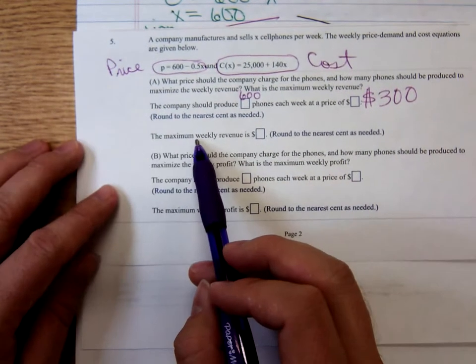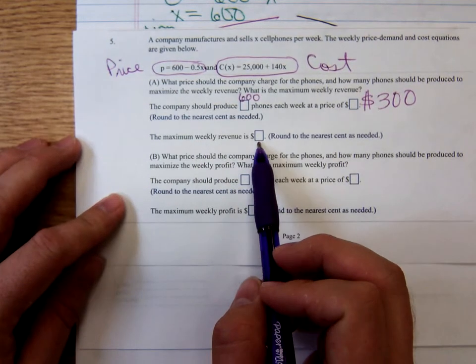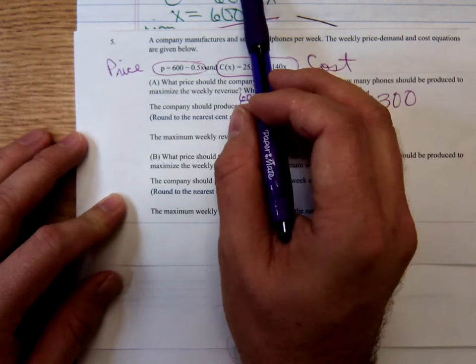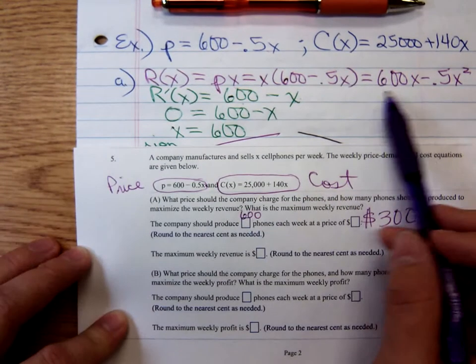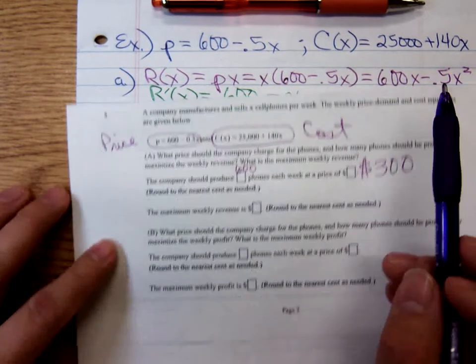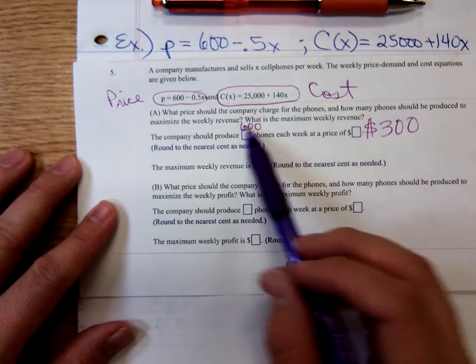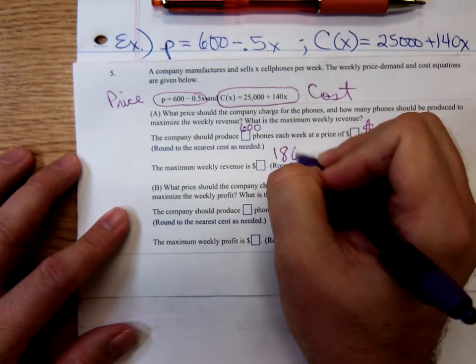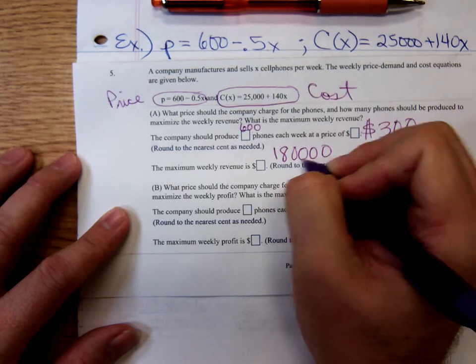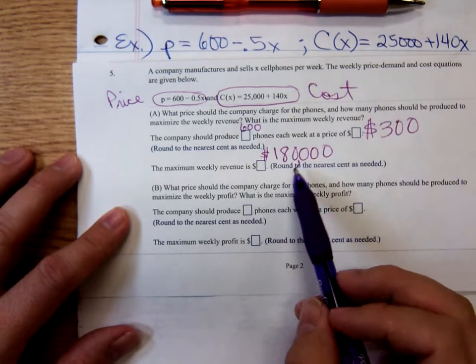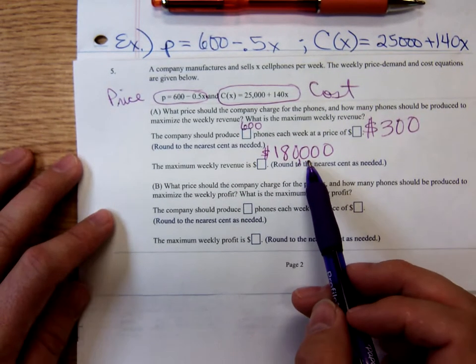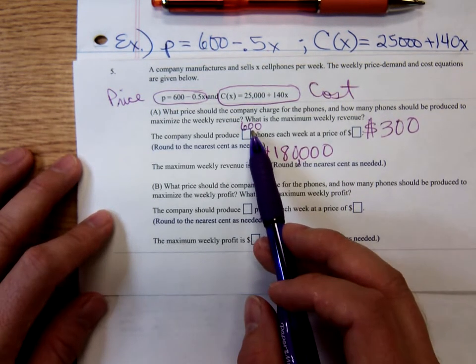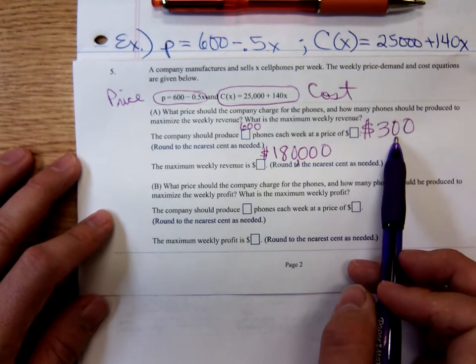So we know the selling price. If they're trying to maximize revenue, the selling price should be $300. And then they want to know what that revenue is in that event. We could plug that 600 into the revenue function that we found up here. Or we could remember that revenue is equal to price times quantity. Multiplying 600 by 300, we get 18 and four zeros. So it looks like their maximum revenue, the maximum money they could take in in a week, would be $180,000.